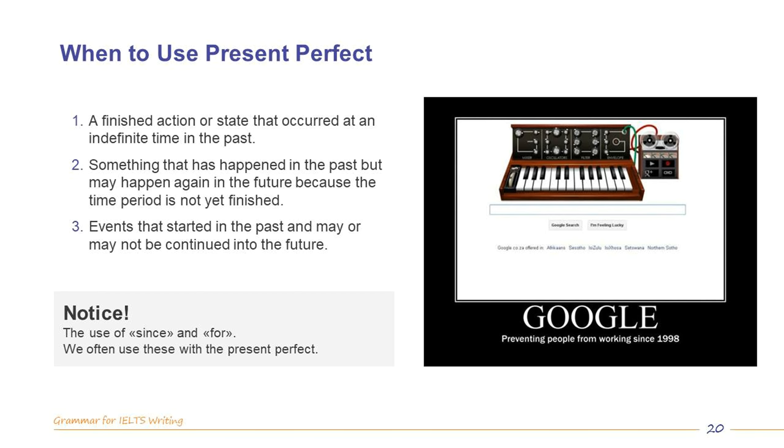Number three, similar to the previous rule, present perfect can also be used for events that started in the past and may or may not be continued into the future.